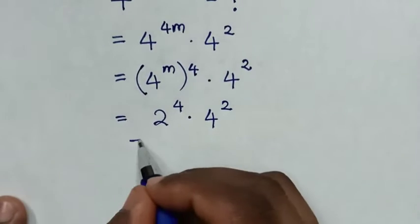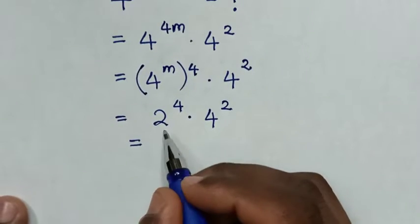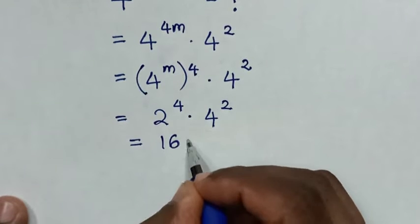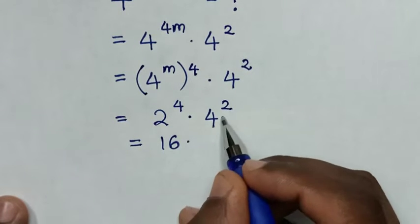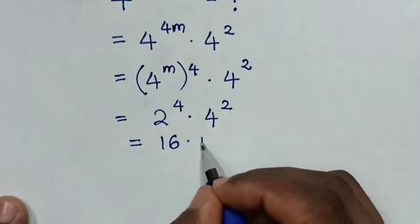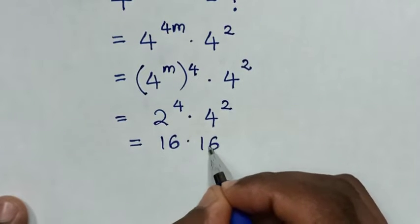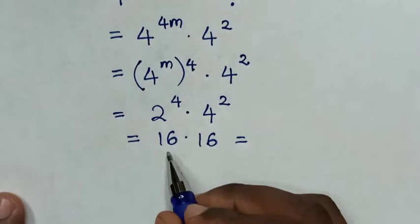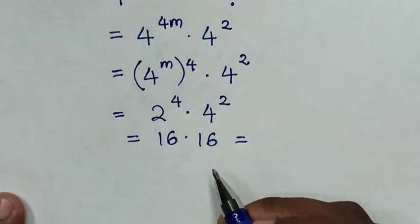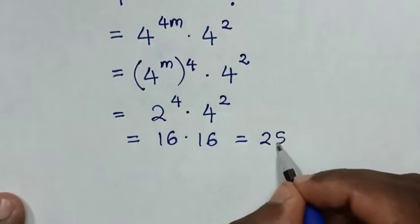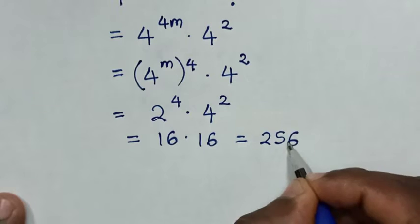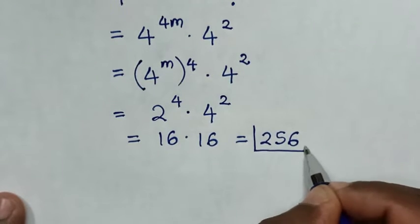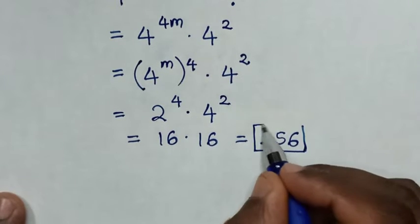Then it will be equal to 2 power of 4, which is 16, times 4 power of 2, which is 16. Then 16 times 16 is 256. Therefore this is the correct answer.